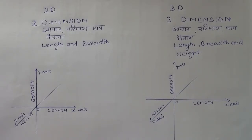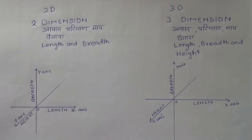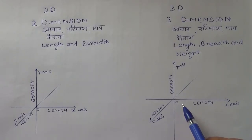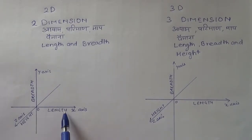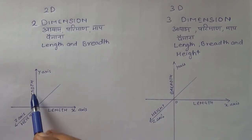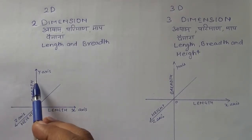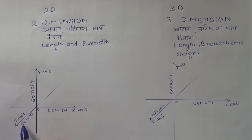A shape with two dimensions must have length and breadth. A shape with three dimensions would have length, breadth, and height. Measurements start from zero — length from zero to whatever the measurement, breadth from zero to whatever the measurement, and height or depth in the case of three-dimensional shapes.